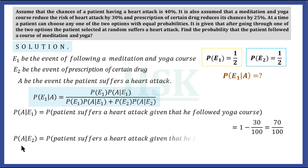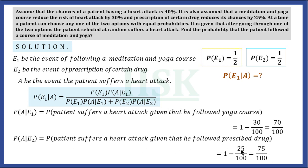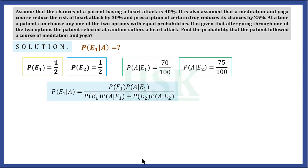Similarly, P(A|E2) — the probability that the patient suffers a heart attack given that he followed a prescribed drug — equals 1 minus 25/100, because the drug reduces the chance of a heart attack by 25%. So 1 minus 25/100 equals 75/100. Now we have calculated all the required values.